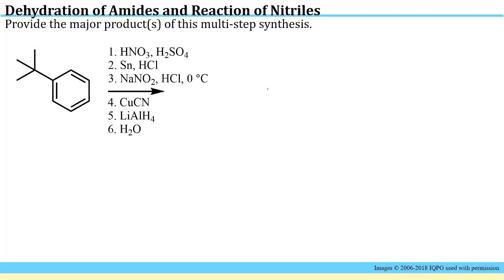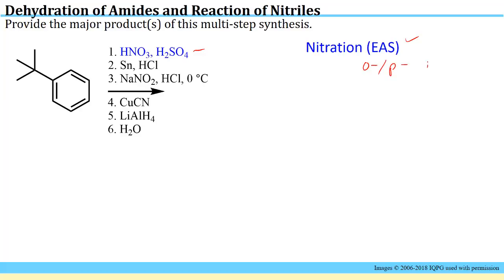Here's one of these intimidating-looking exam problems where you have six steps and you're asked to find the major product of all six. Break this down and carefully think through one step at a time. The first step, shown in blue, is a nitration — one of the electrophilic aromatic substitution reactions. Nitration puts a nitro group onto a benzene ring and is an ortho-para director. We would expect to place the next substituent ortho or para to that t-butyl group. However, the t-butyl group is very sterically encumbering and hinders addition to the ortho position, so the most likely major product of step one is addition of a nitro group to the para position.